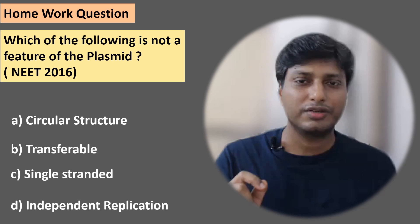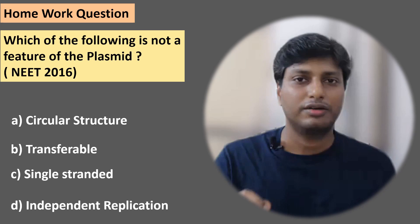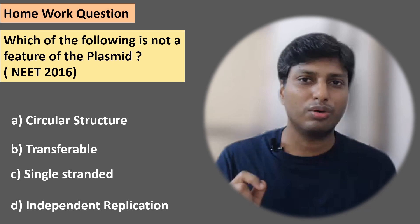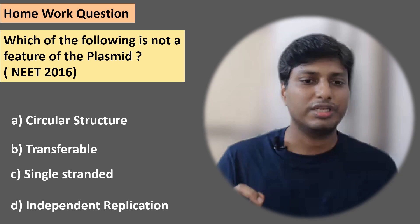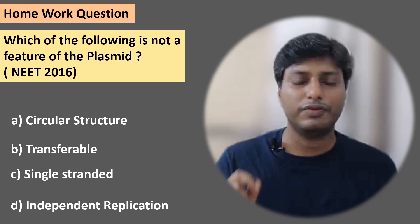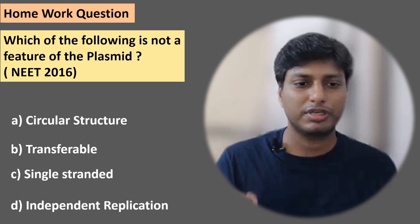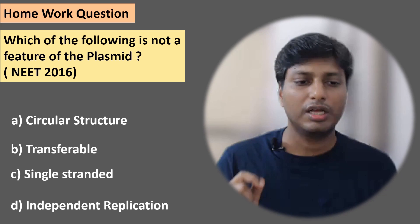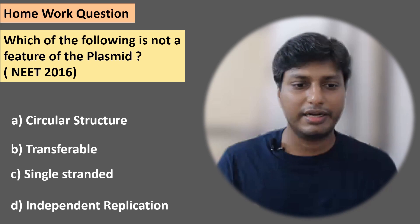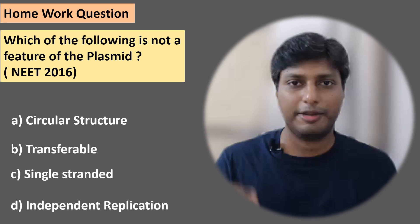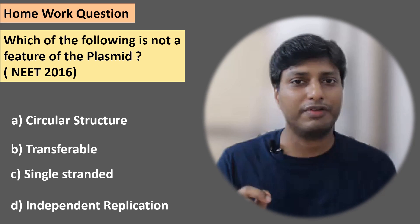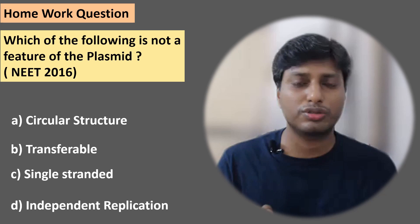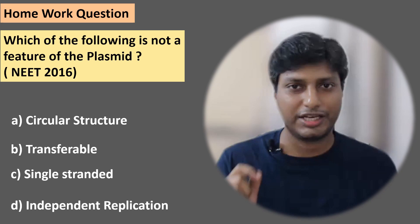Let me give you one question for you all to solve at home. This is your homework question. Which of the following is not a feature of plasmid? Option A: circular structure. Option B: transferable. Option C: single-stranded. Option D: independent replication. Try to answer this question and whatever answer you think, please put it in the comment section.